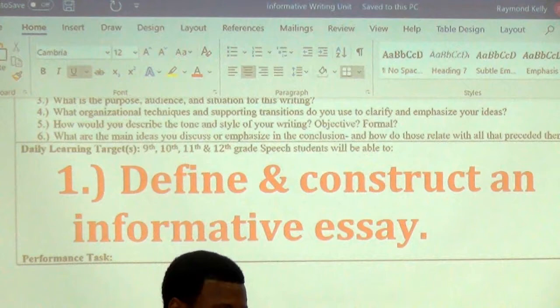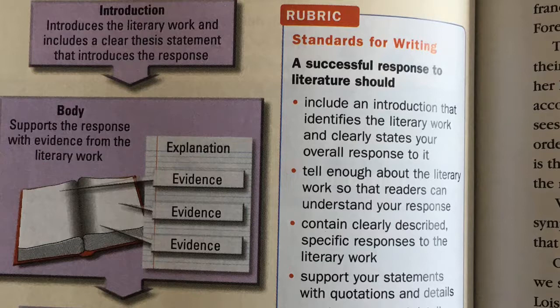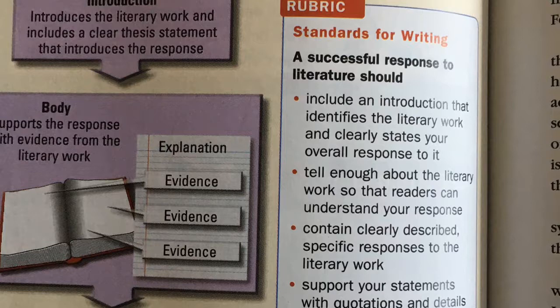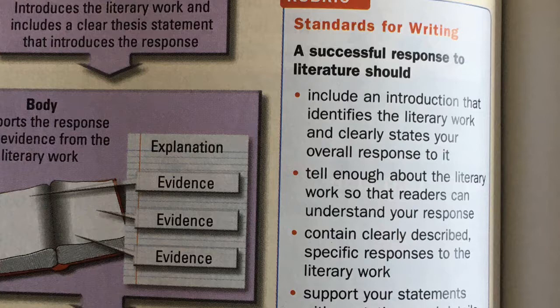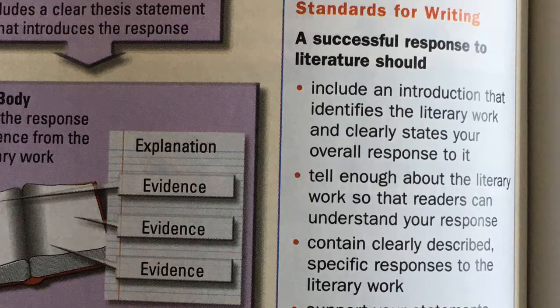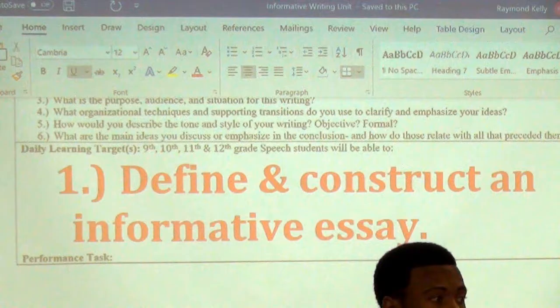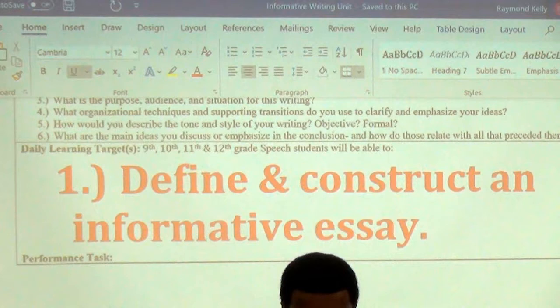The first bullet point says: a successful response to literature should include an introduction that identifies the literary work and clearly states your overall response to it. So in your first paragraph — remember, it's going to be about four to five paragraphs — you're going to introduce: this is an essay about A Christmas Carol by so-and-so.